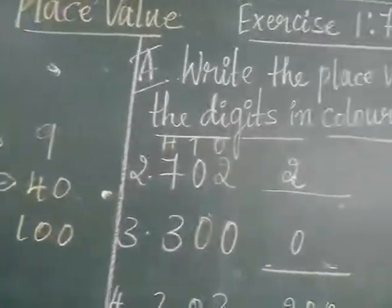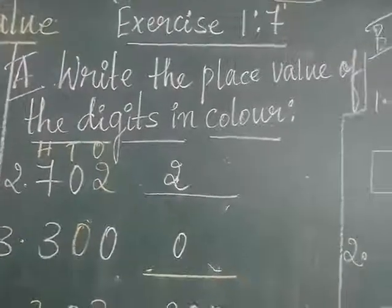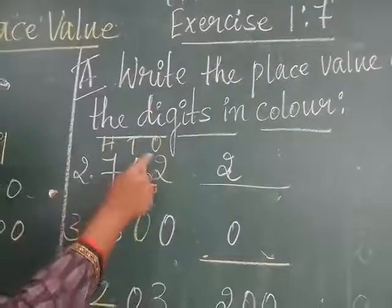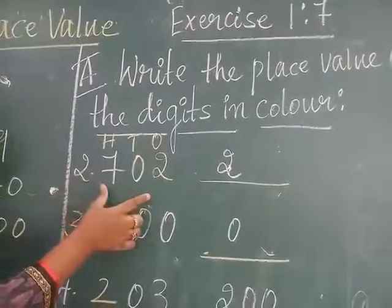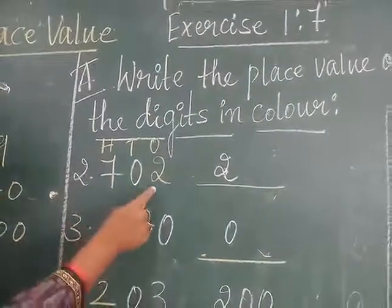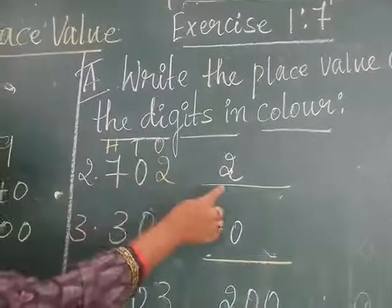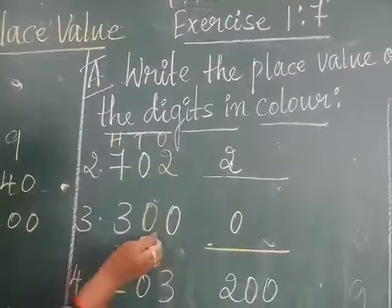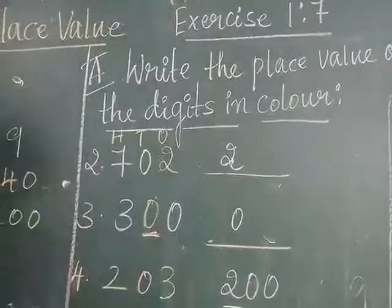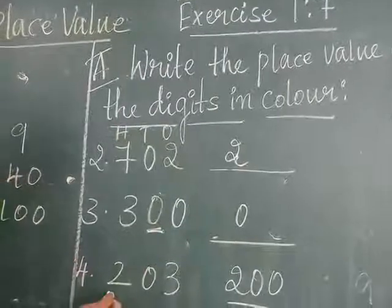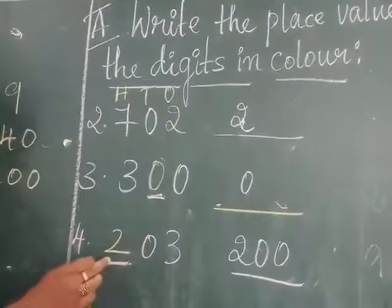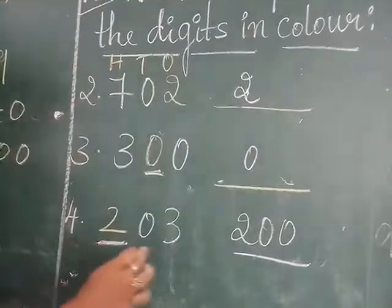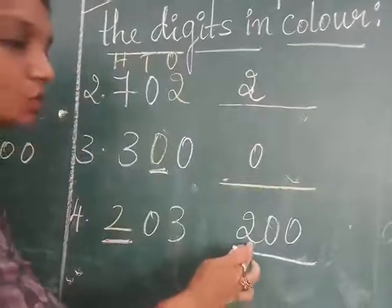A1 — write the place value of the digit in colors. Always write in 1's, 10's, in 100 — in all the numbers. If you see here, 2 is in which place? 2 is in 1's place, means its place value is 2. Next is 300 — here, 0 is there; 0 place value is 0 only. The next one — 2 is in which color? 2 is in 100's place, means the place value is 200.